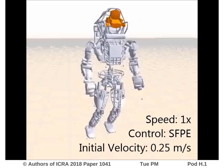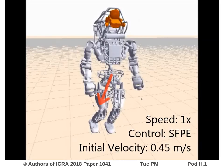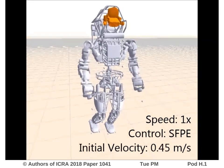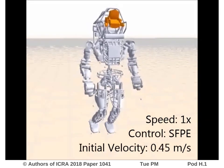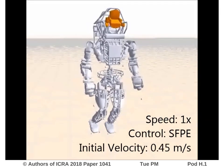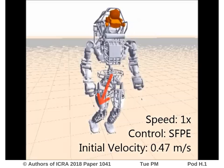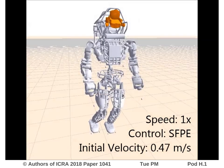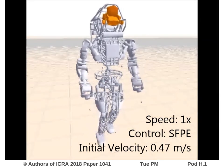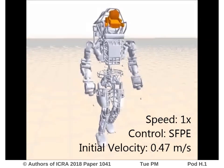Even at high initial velocities in a diagonal direction, the SFPE enables balance recovery. The dynamic step location predictor is able to generate stepping locations in any direction.